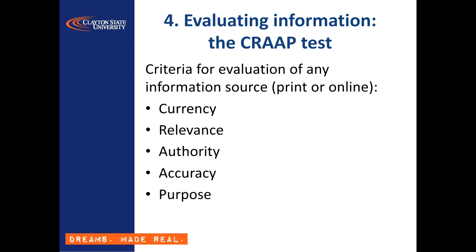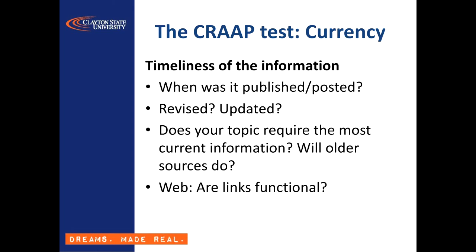It's currency, relevance, authority, accuracy, and purpose. C is for currency, and what you want to know is when was this article, web page, or whatever it is published? Is it still accurate and up to date? Has it been revised or updated since its first publication? Look for copyright or publication dates, dates of revision or update.